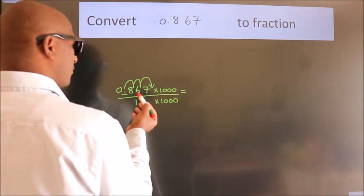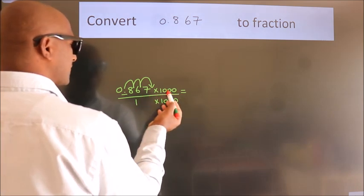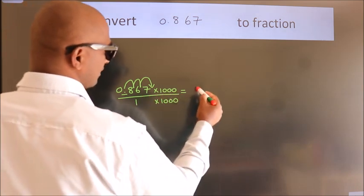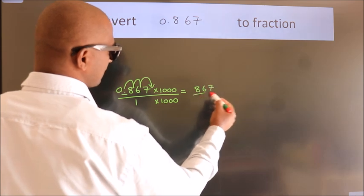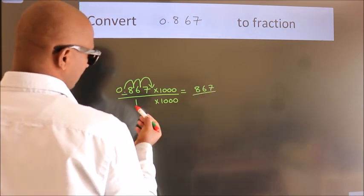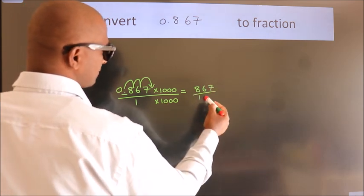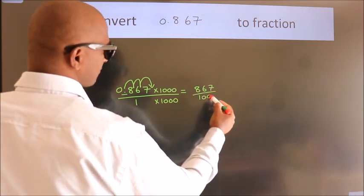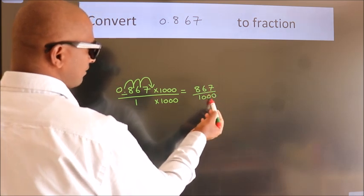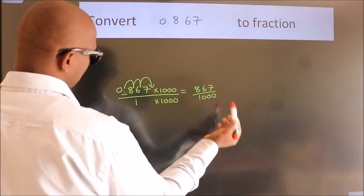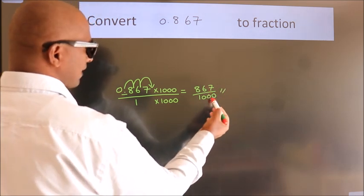0.867 into 1000 gives 867. 1 into 1000 gives 1000. This cannot be simplified any further, so this is our fraction: 867/1000.